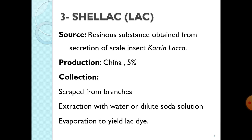Regarding collection and purification: the secretion derived from branches is separated using knives and scraped off. After scraping, the material is processed with water so that in solid form or powder form, lac dye can be obtained. Lac dye is called a dye because it is a colouring matter. This is the collection procedure through which we obtain shellac or lac dye in powder form.